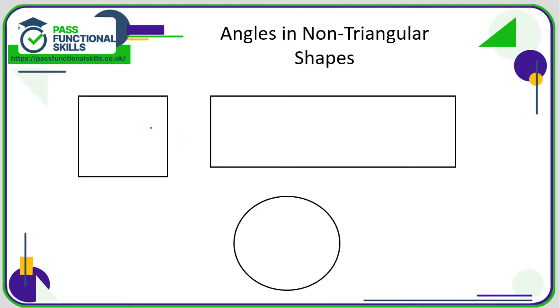Now with squares and rectangles, very simple angle properties. A square has four right angles, a rectangle also has four right angles. And since a right angle is 90 degrees, 90 times by four is 360 degrees.